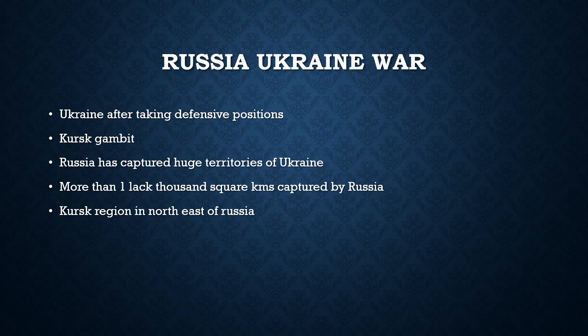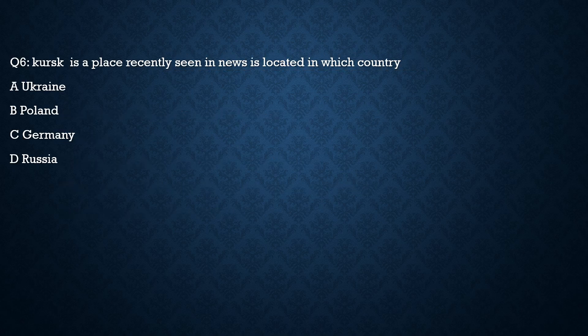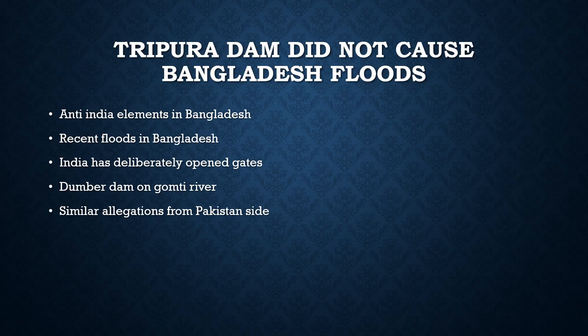Question 5: Kursk, recently seen in the news, is located in which country? The answer is Russia — it was recently captured by Ukraine. This is a straightforward map-based question of the type that appears in the exam.